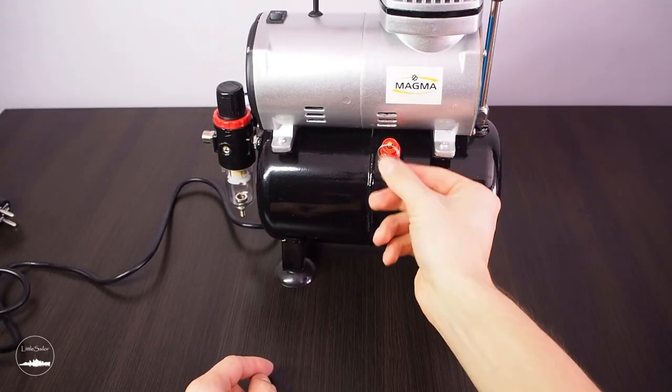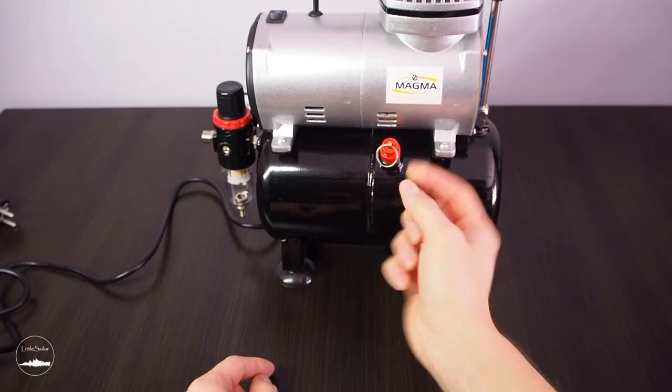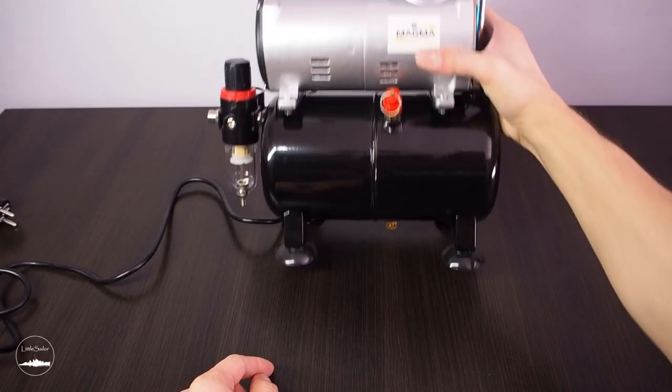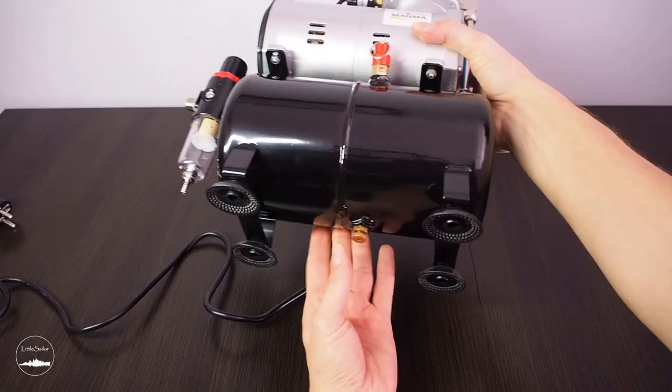The compressor also has a safety valve. If the pressure switch works bad and the pressure increases to 6 atm it automatically releases compressed air.